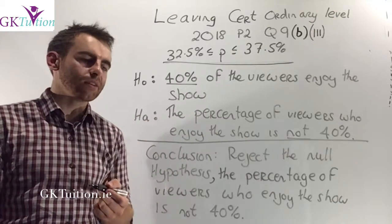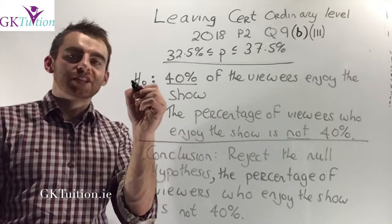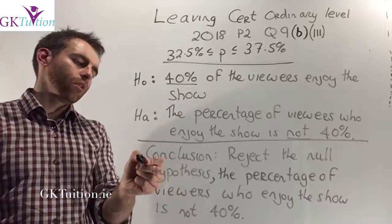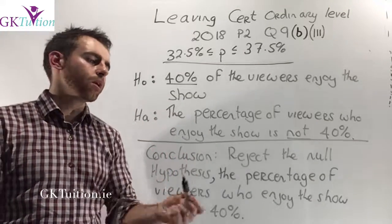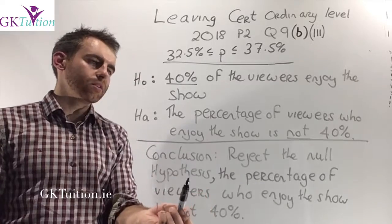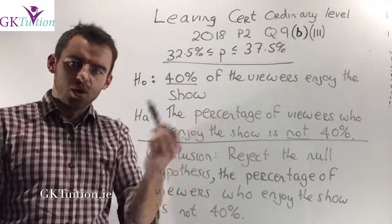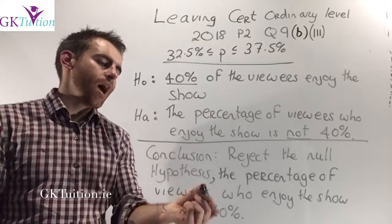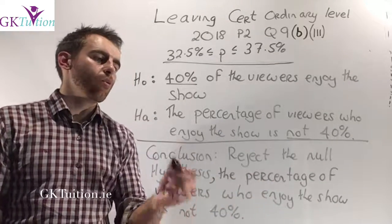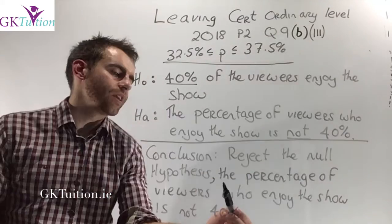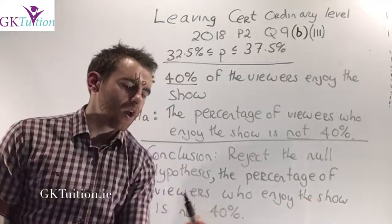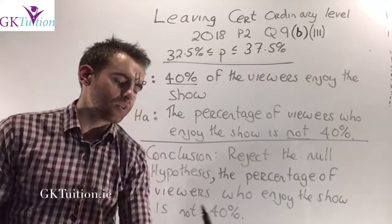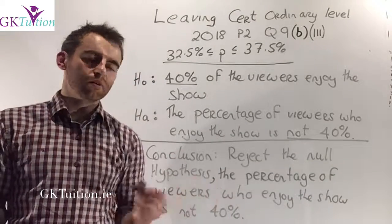So in this case I'm going to reject the null hypothesis. I've written down my conclusion at the bottom here. I'm going to reject the null hypothesis because the 40% is not within my confidence interval. And when you reject your null hypothesis, you should reiterate what you mentioned for your alternative. I rewrote this as the percentage of viewers who enjoy the show is not 40%.